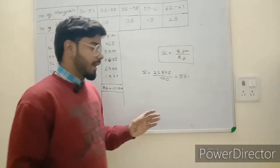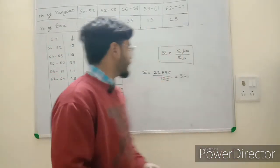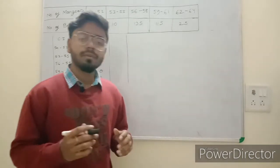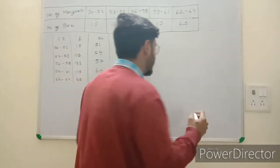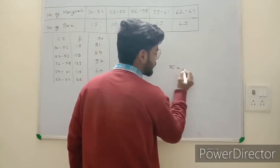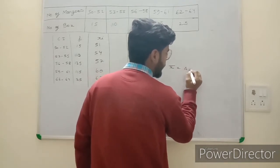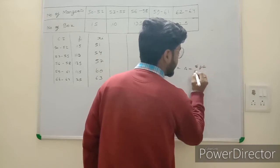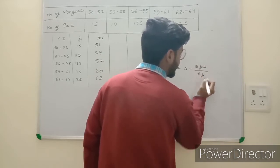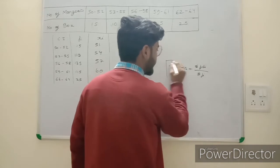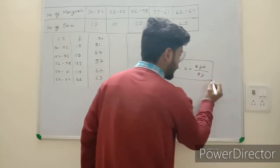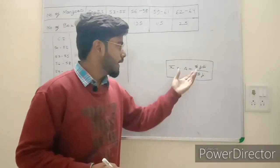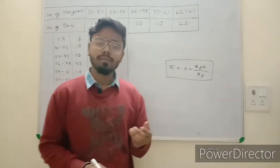Now we find the mean using the assumed mean method. The formula is: x̄ = a + (summation of fi×di) / (summation of fi). There are two new variables: a, which is the assumed mean, and di.